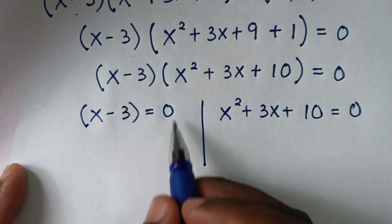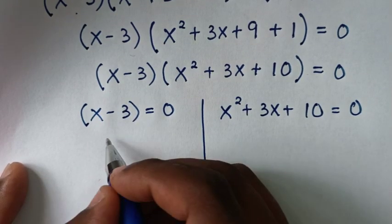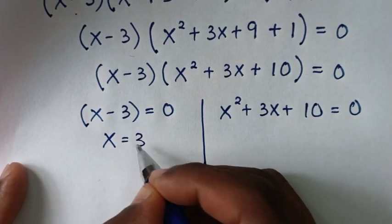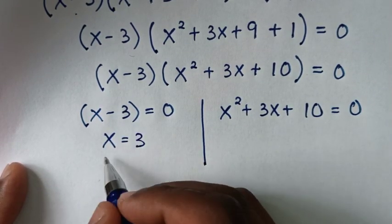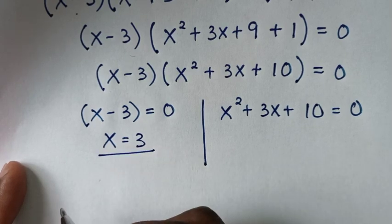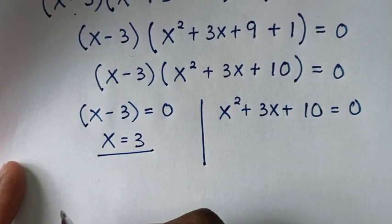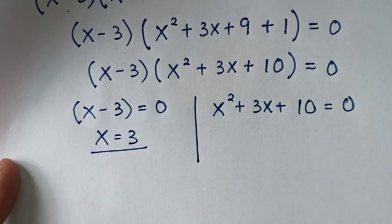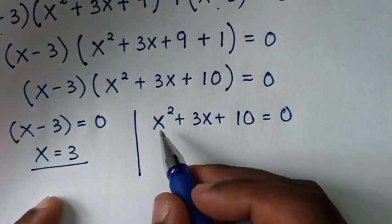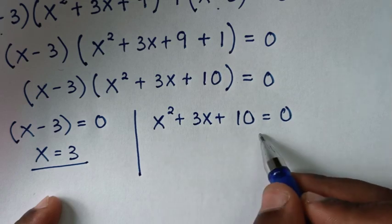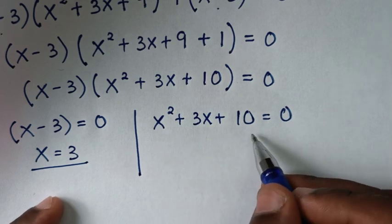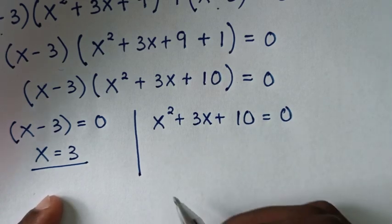From here, x = 3 is the first value of x, which is the real solution. Now to solve the quadratic equation x² + 3x + 10 = 0, we will use the quadratic formula to find the remaining values of x.